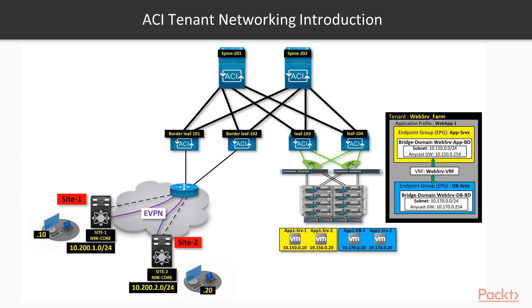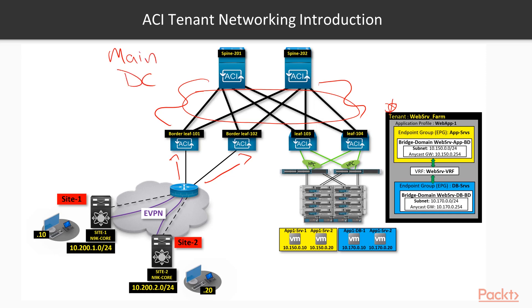We not only leverage a fabric to run virtual networks on top of it — meaning we have the ACI fabric representing our data center fabric — but we also leverage a single fabric to run multiple tenant networks and for external connectivity purposes. For example, in a common scenario, our main data center hosts our compute infrastructure.